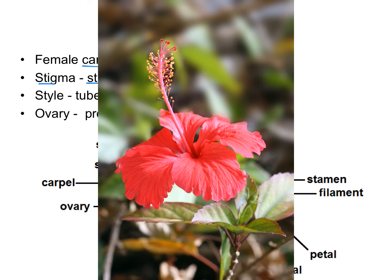This is a hibiscus flower. The stamen and carpel look a little different than our diagram. This entire structure is the carpel, and it extends down into the base of the flower where the ovary containing the ovules is. The stamens, instead of coming out separately as in the diagram, are actually coming off of this structure — each little stalk is a filament, and each tip is an anther.